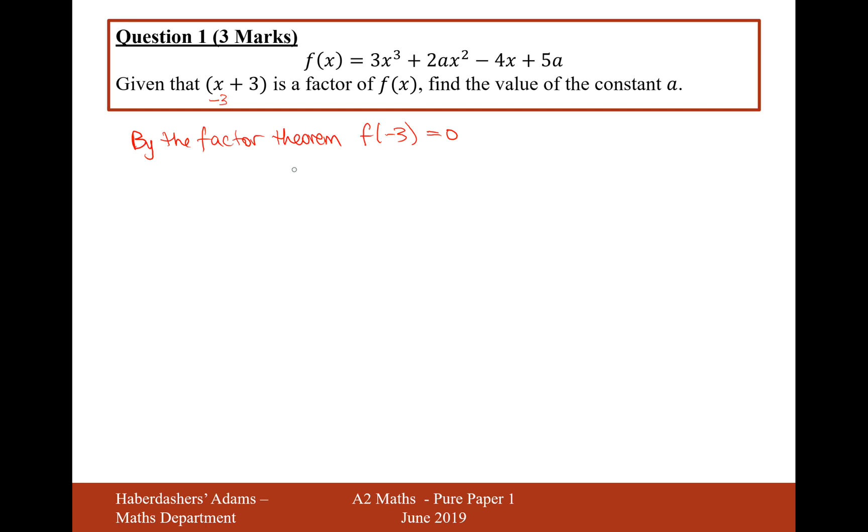Therefore, f(-3) equals 3 lots of (-3)³ plus 2a lots of (-3)² minus 4 times (-3) plus 5a equals 0.